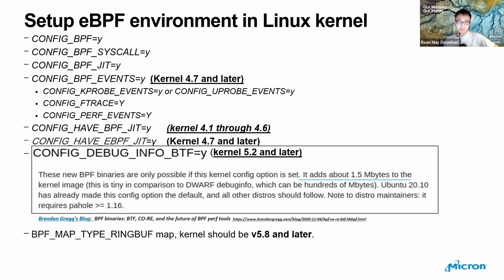Also, if we want to get trace data efficiently, we want to use the latest eBPF data structure in the kernel — the ring buffer map — but this is only available since kernel 5.8. For embedded systems, looking at the kernel versions already in use, some customers are still using 2.6 or 4.0 kernels. Even embedded customers using the latest kernel version, considering kernel image size constraints, will not enable all the kernel configuration options required by eBPF. This is a challenge for deploying eBPF in embedded systems.